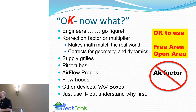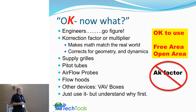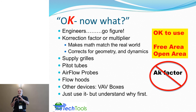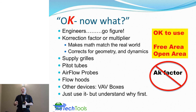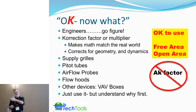Airflow probes have K-factors. Flow hoods actually have K-factors too — sometimes the manometer coupling to the flow hood has a K-factor adjustment because you can use different geometries of flow hoods with different skirt sizes to adapt to supplies and returns. VAV boxes may also have K-factors. All these K-factors are not equivalent — that's the key point. You should use them, but understand why you're using them first.